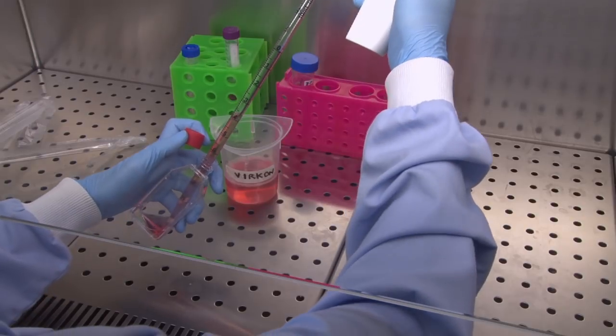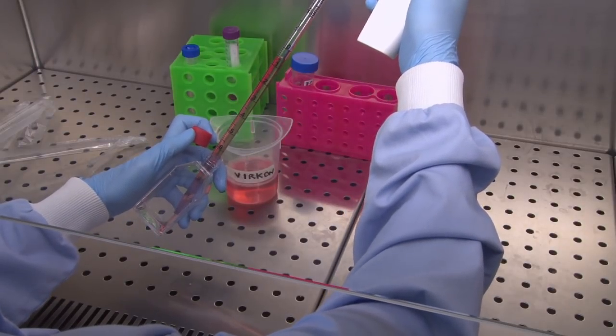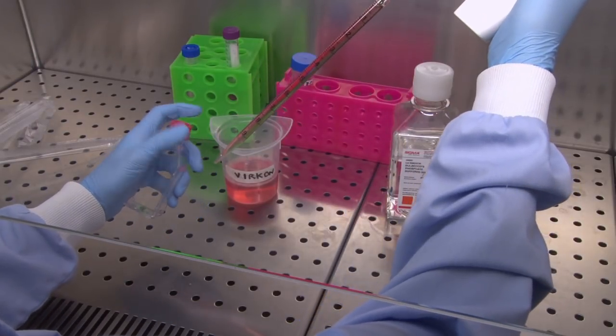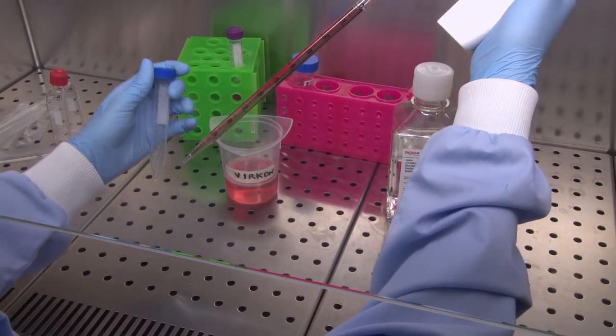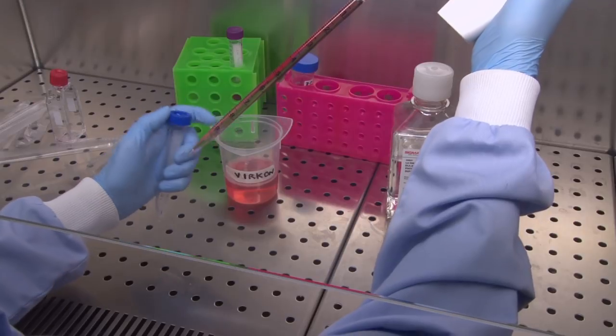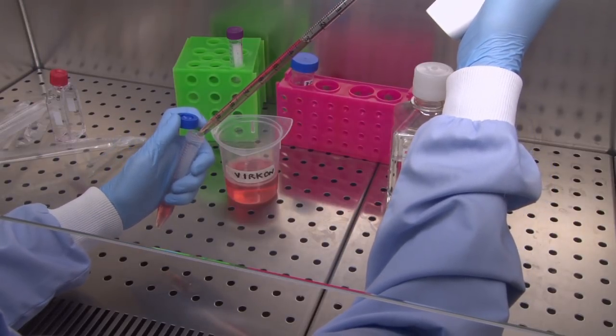Using the same pipette, remove all of the liquid from the flask. And using one hand, remove the cap of a centrifuge tube and put the liquid in before replacing the cap.